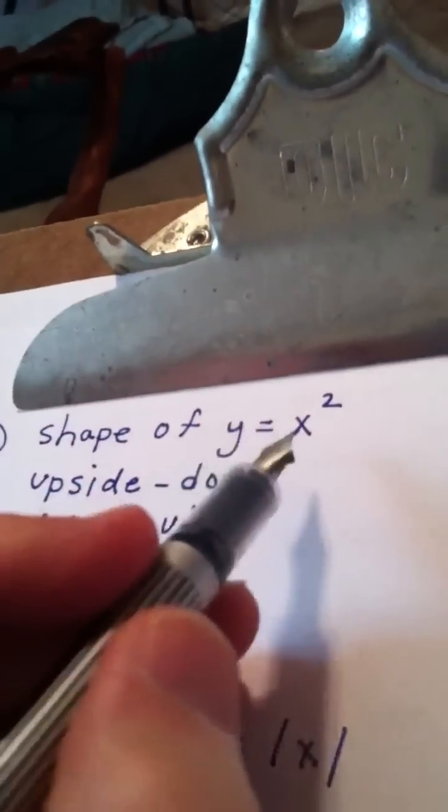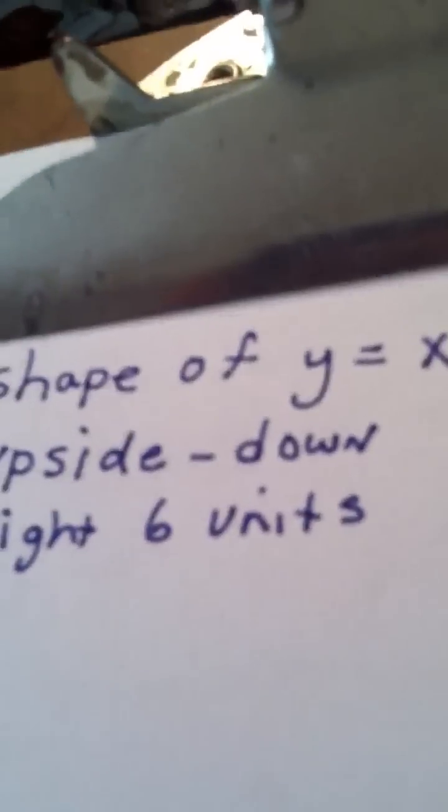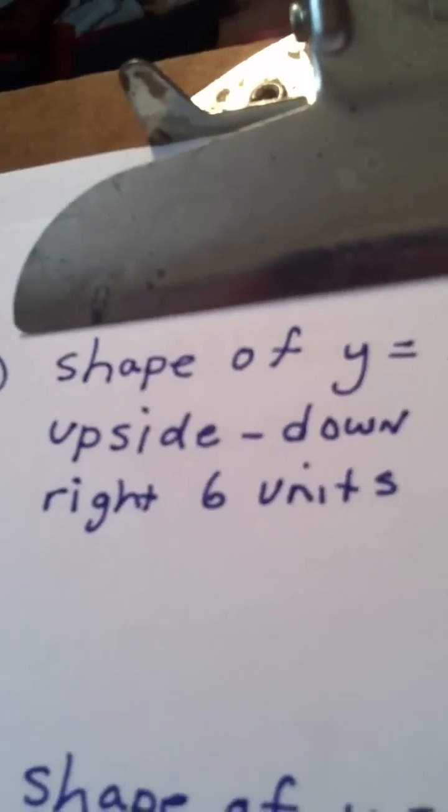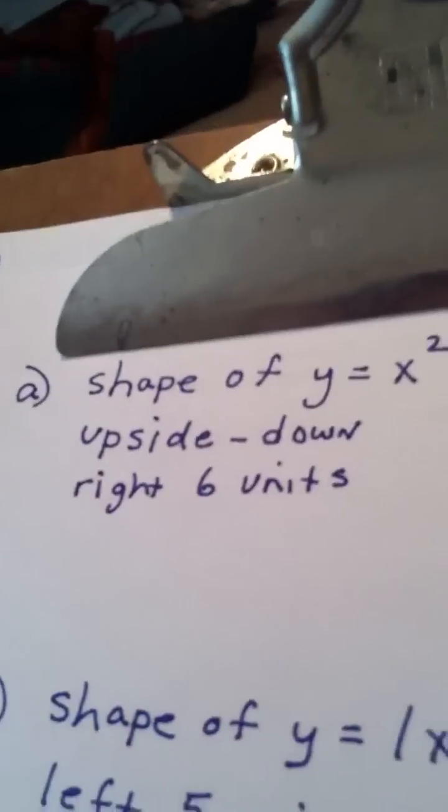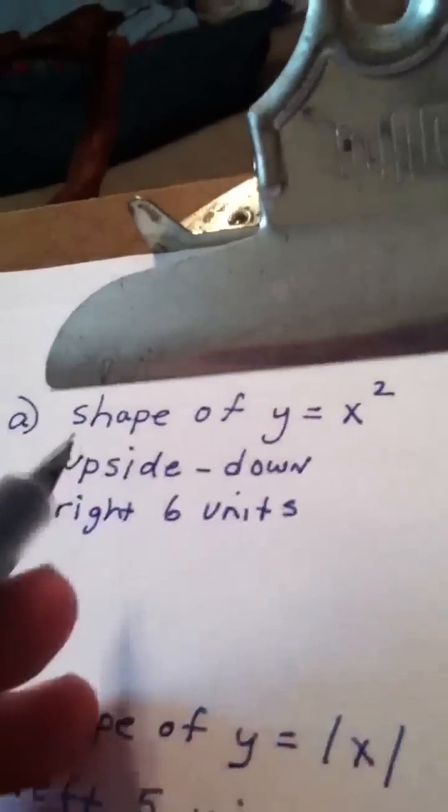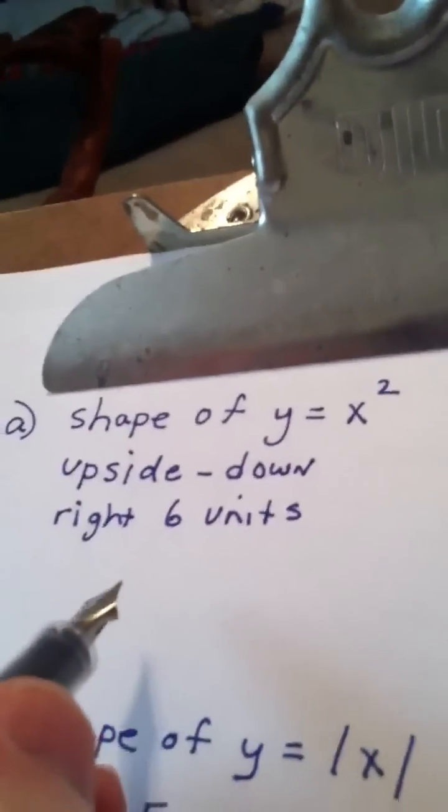It has the shape of y equals x squared, it's turned upside down, and we're moving the original graph to the right six units. So basically, here's what's going to happen.